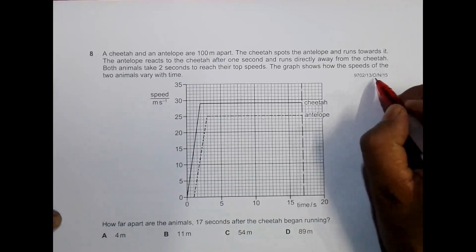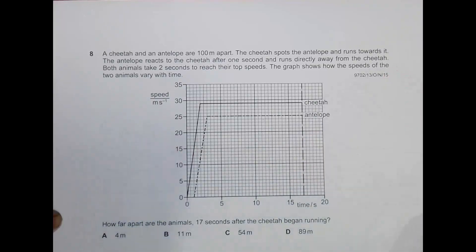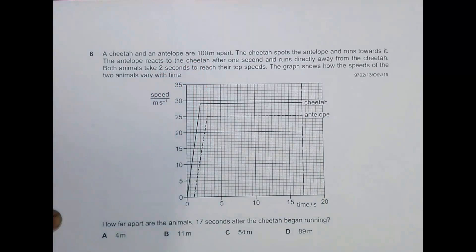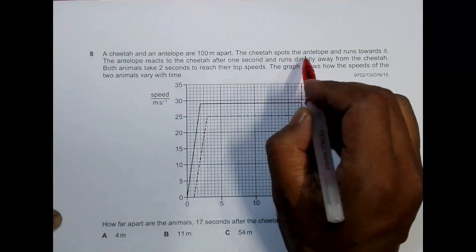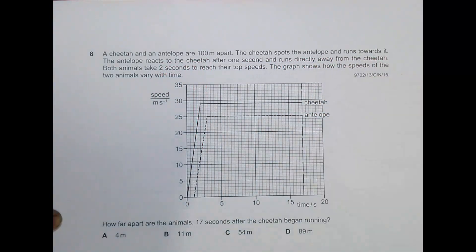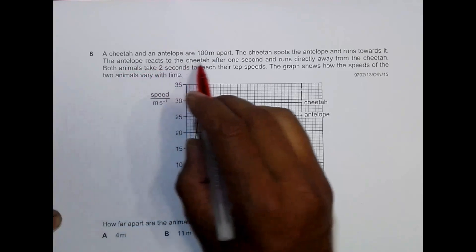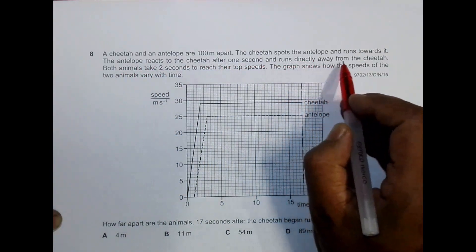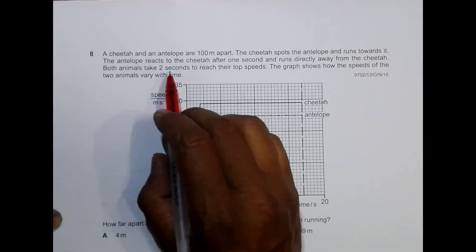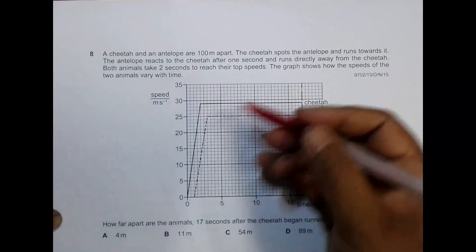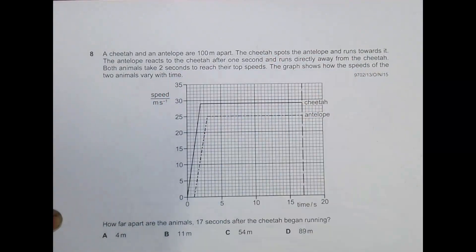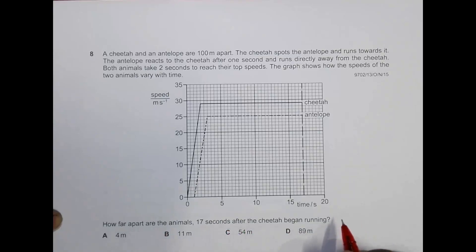This is the 2015 October/November Paper 13, question number 8. It says a cheetah and an antelope are 100 meters apart. The cheetah spots the antelope and runs towards it — it is a chasing phenomenon. The antelope reacts to the cheetah after one second, and both animals take two seconds to reach their top speeds. The graph shows how the speeds of the two animals vary with time. We need to find how far apart the animals are 17 seconds after the cheetah began running.